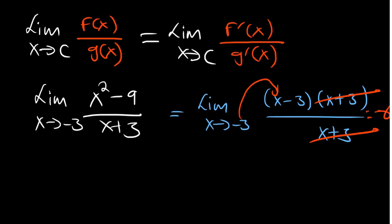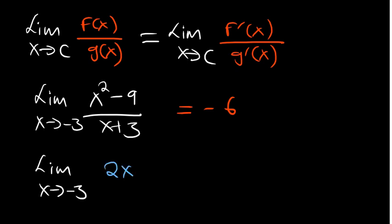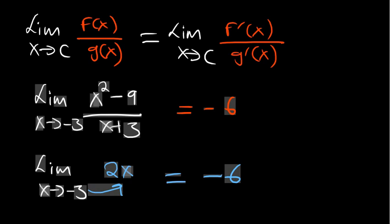According to L'Hôpital's Rule, instead of doing all that, we differentiate. The derivative of X² - 9 is 2X, the derivative of the denominator is 1. Plugging in negative 3 gives us negative 6 as well — the same answer.